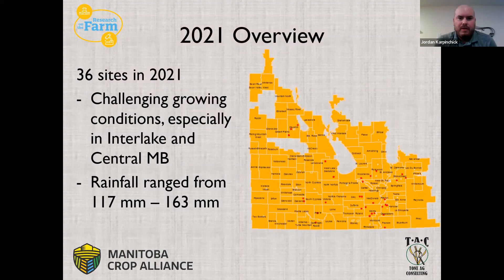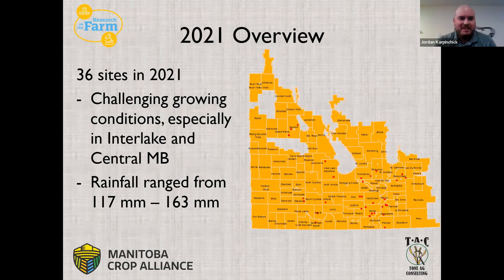For 2021 we had 36 sites across the province. As many of you know, there were definitely some challenges this growing season in terms of weather conditions, especially in the Interlake and central Manitoba, where cereal yields were definitely lacking — some of our sites were down to 15 bushels per acre for spring wheat. Rainfall ranged from about 117 to 163 millimeters with an average of 145 millimeters from May to August, which is about 66% of normal for cereal growing.